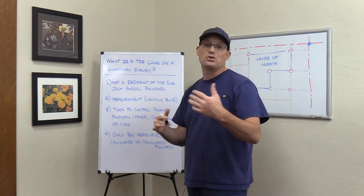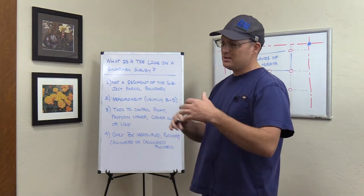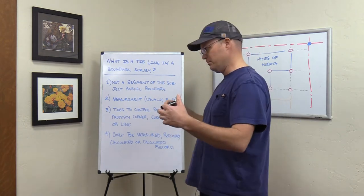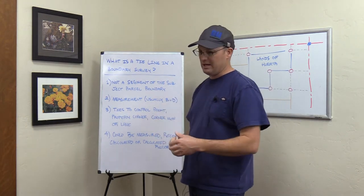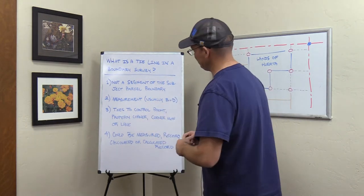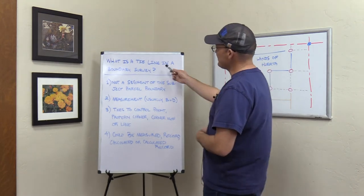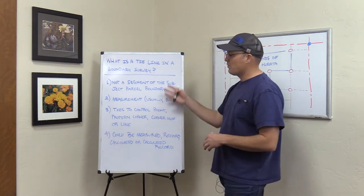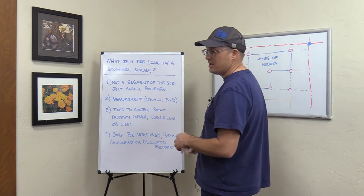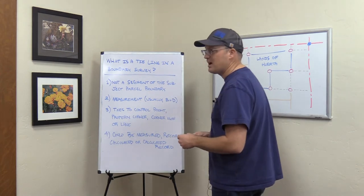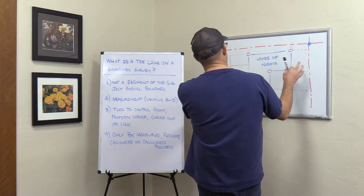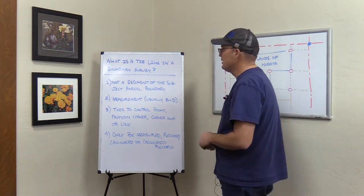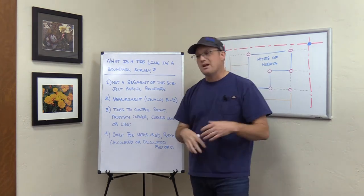It's important if you're a drafter that you understand what a tie line is, because tie lines typically go on their own layer with their own color and their own line type. So what is a tie line in a boundary survey? I'm going to go over my four criteria for what makes a line a tie line, and then we'll talk about an example.